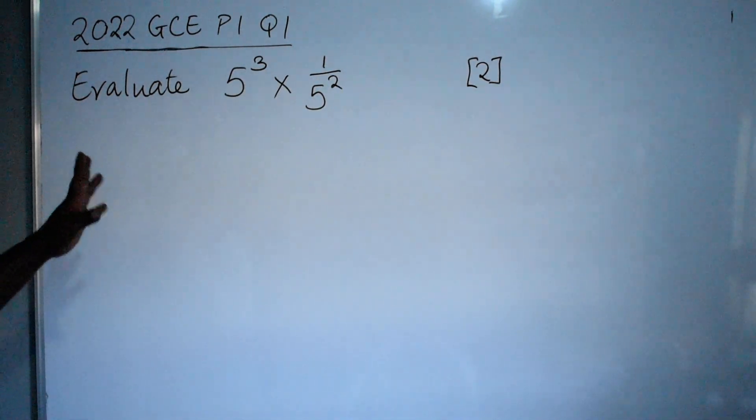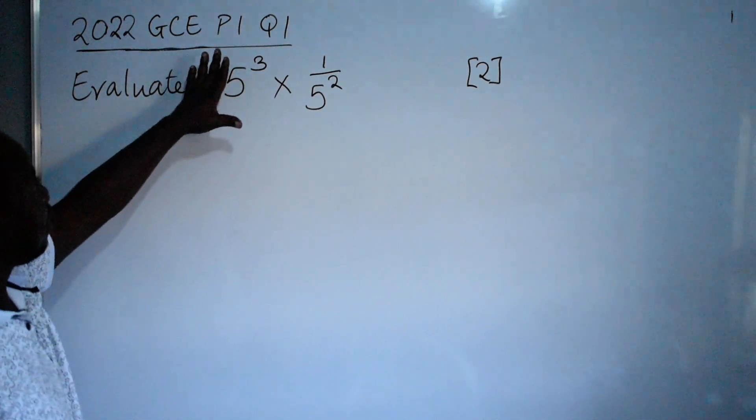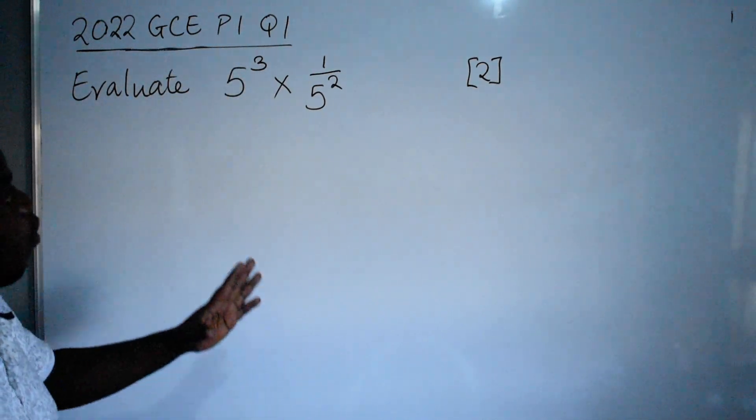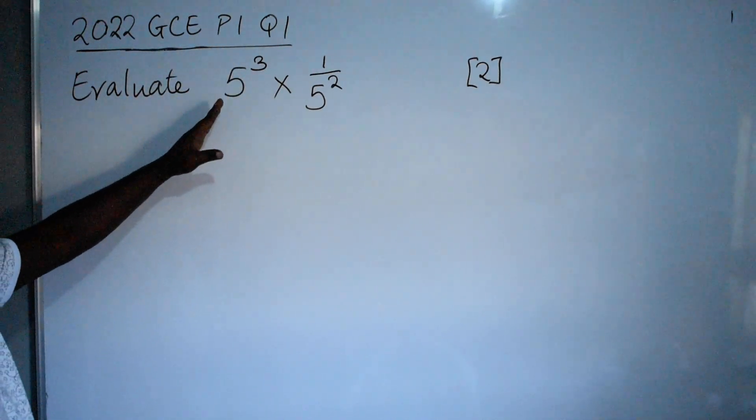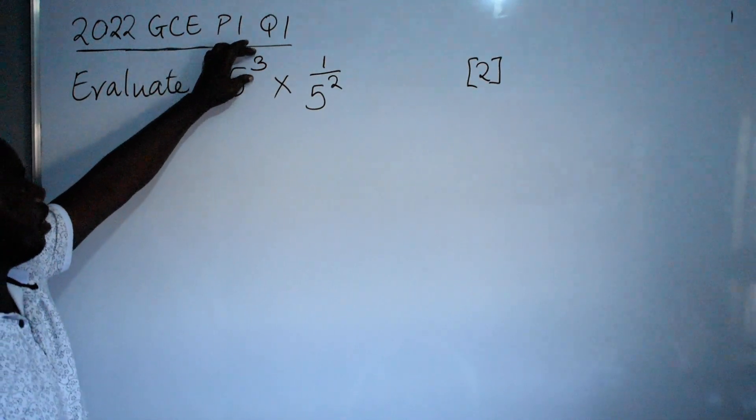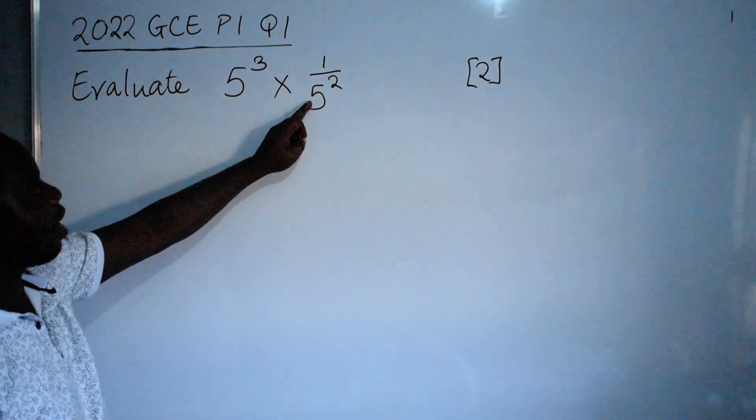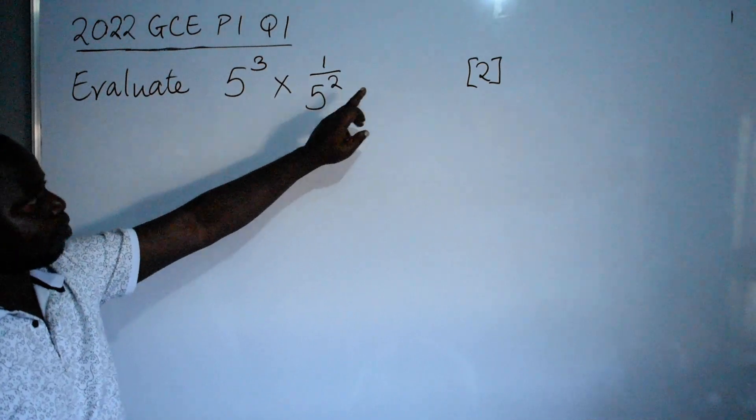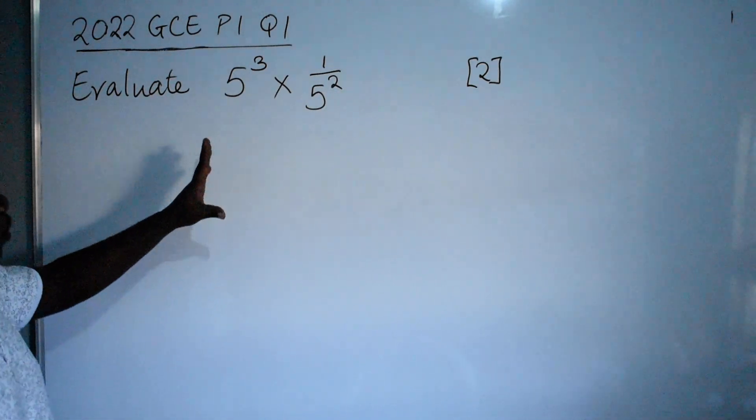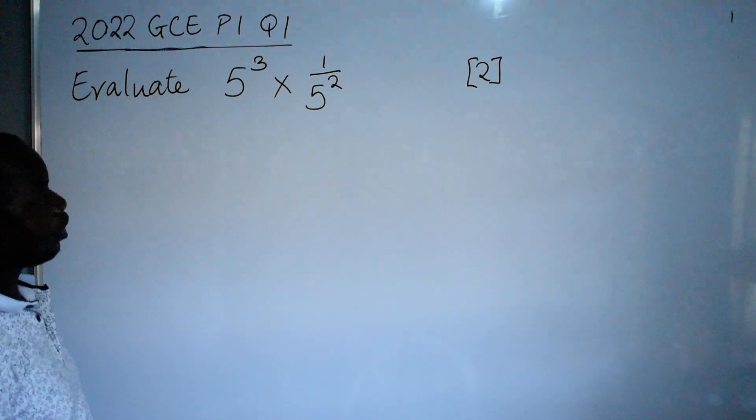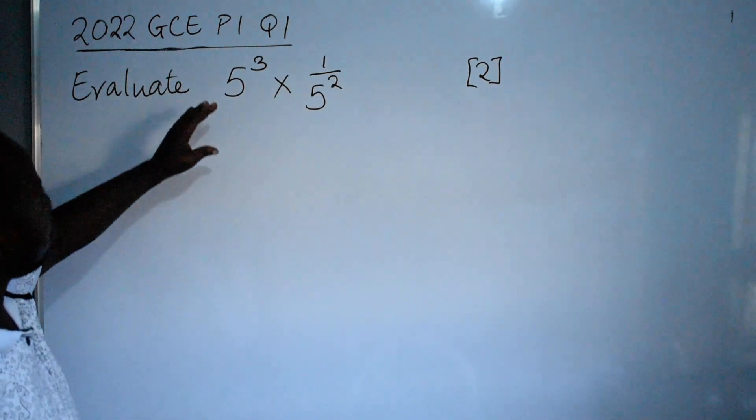Hello friends, let's look at 2022 GCE paper 1 question 1. Evaluate 5 raised to the power 3 times 1 over 5 raised to the power 2. 2 marks. So this question you are seeing here